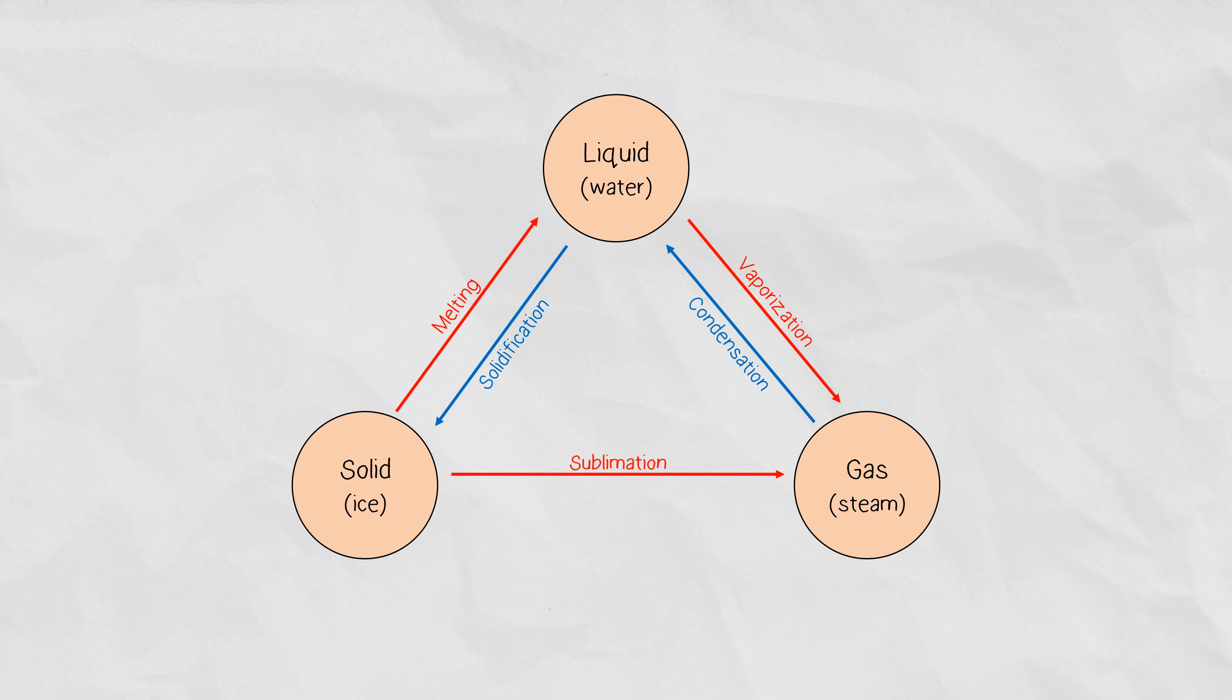For example, it can be seen artificially when you remove dry ice from a freezer and you see the fog-like vapors. That's actually solid carbon dioxide directly turning into a gas.